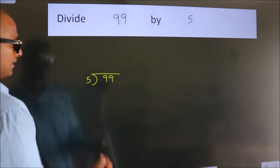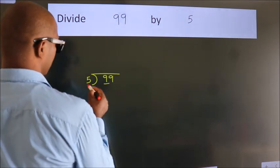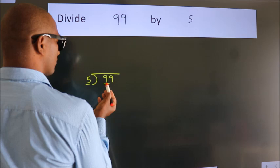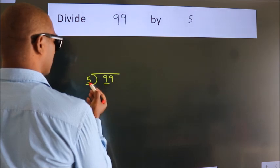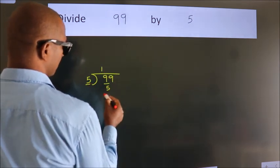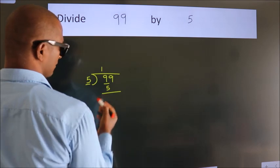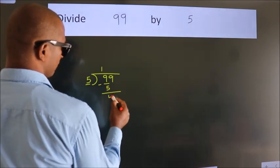Next, here we have 9, here 5. A number close to 9 in the 5 times table is 5 once, which is 5. Now we should subtract. We get 4.